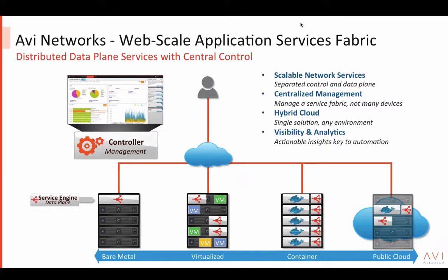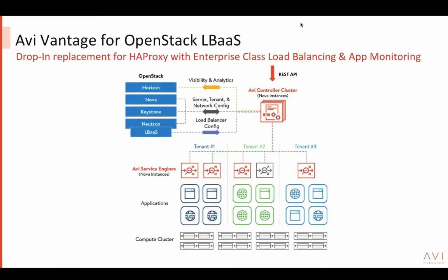This is how AVI maps back to our OpenStack discussion — as a drop-in replacement for HAProxy, natively integrated with OpenStack services such as Nova, Neutron, Keystone, Horizon, and LBaaS, while providing enterprise-grade load balancing, application monitoring, and security services. The AVI controller is deployed as a cluster of Nova instances running on OpenStack — not as sitting appliances outside.